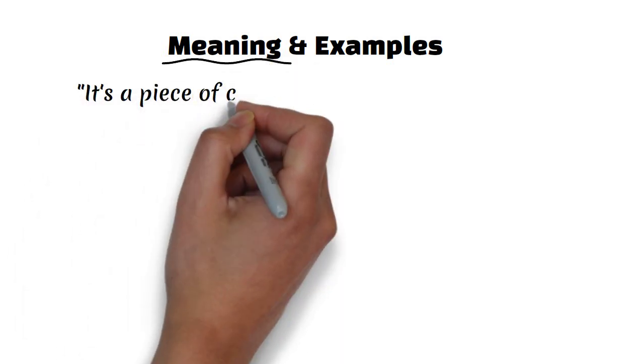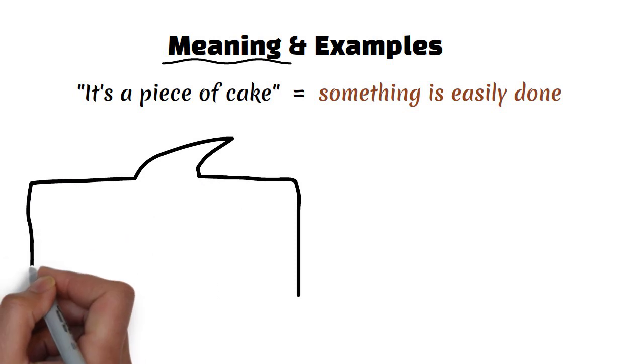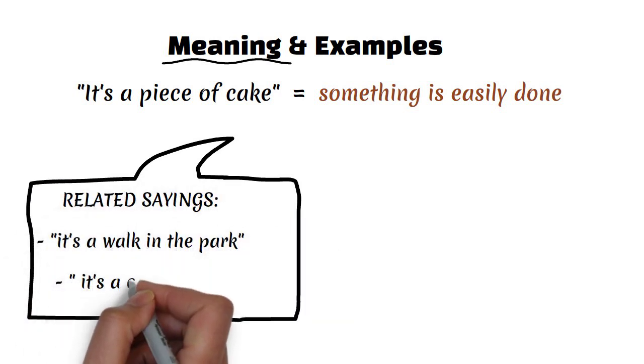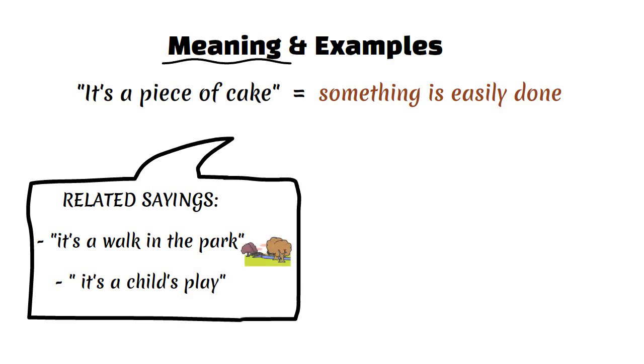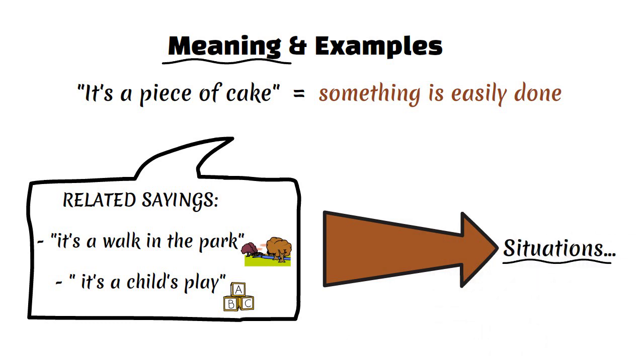It's a piece of cake means that something is easily done. Other related sayings which convey the same or similar meaning are 'it's a walk in the park' or 'it's a child's play.' Let's have a look at some examples or situations where we could use this idiom.